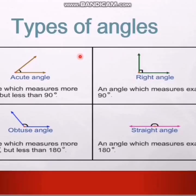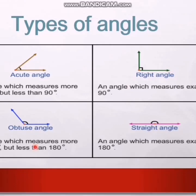Now, types of angles. There are many types but here we discuss only four. First is the acute angle — the angle that is greater than zero but less than 90 degrees. Next is the right angle — the angle that is exactly 90 degrees.